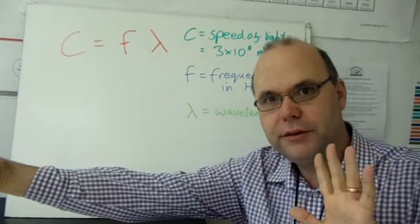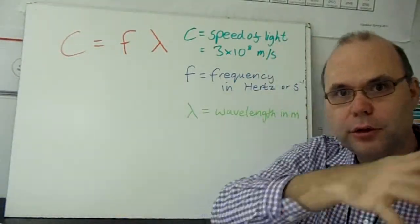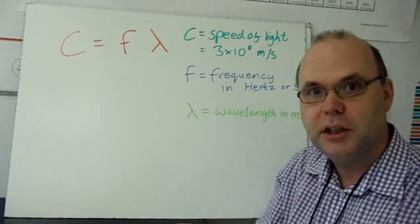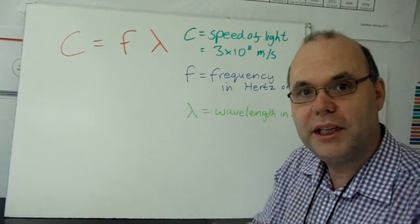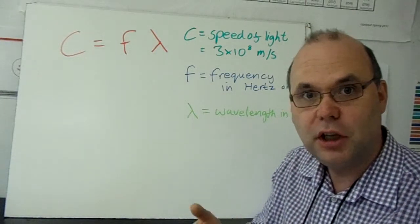If you've got a long wavelength, it takes longer for a wave to go past a point, so you get fewer waves per second. That's a lower frequency.